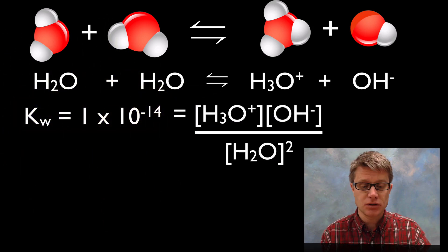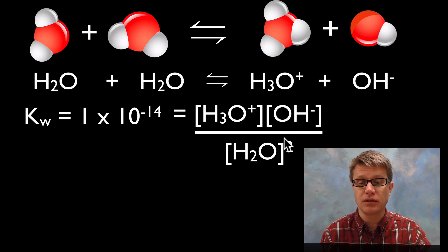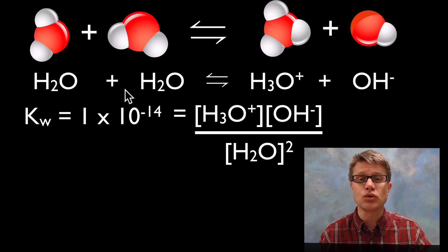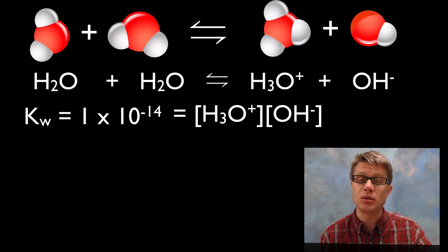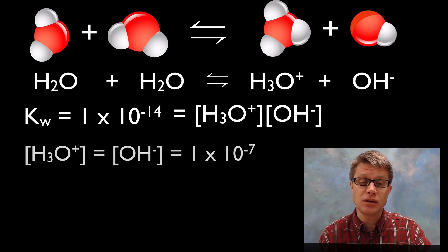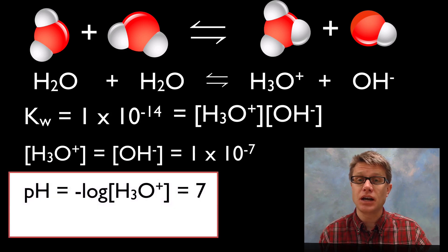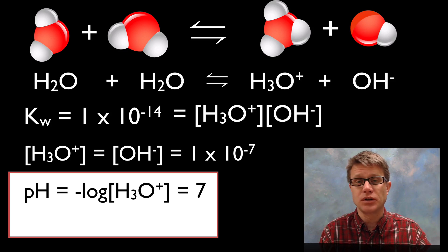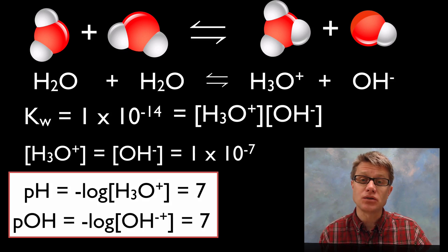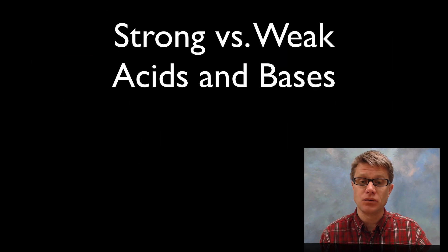The equilibrium constant is the concentration of the two products divided by the concentration of the two reactants. We have 2 moles of water on the left side, but since water is always present we can ignore it, giving us our Kw value. Since Kw is 1×10⁻¹⁴, the concentration of hydronium and hydroxide must each be 1×10⁻⁷. Therefore pH — the negative log of hydronium concentration — is 7. It's easier to deal with pH than those ridiculously small numbers. Likewise pOH is 7, and pH + pOH always adds up to 14.